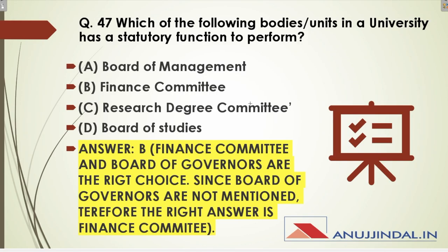Question 47: Which of the following bodies or units in a university has a statutory function to perform? This is a very direct question. The answer is the finance committee. Finance committee and board of governors are the right choices; since board of governors is not given as an option here, the correct answer is finance committee. For your exam, learning about committees and commissions from the quality and environment section is very important.